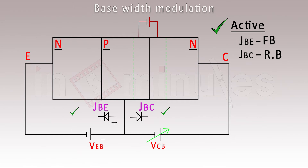Now, with the reverse bias voltage applied between the p and n region, the initial width of the base is very small compared to the n regions on either side. The largest area belongs to the collector and the smallest to the base. For understanding the concept, a larger base area has been shown in the diagram, but the actual width of the base is very small.